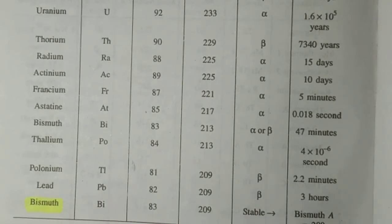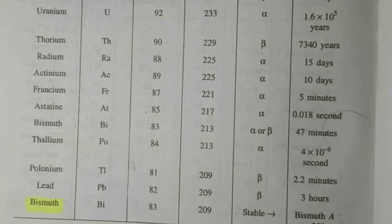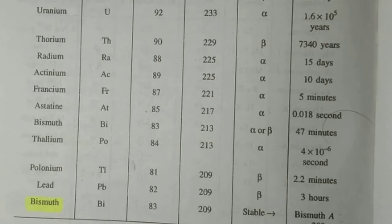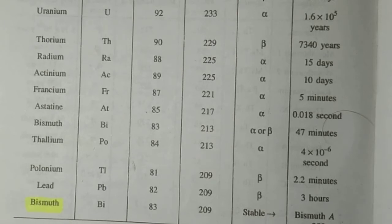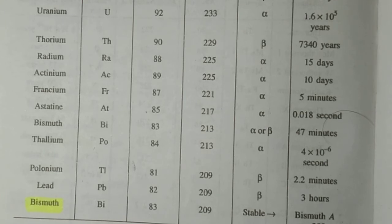So these are the radioactive series. It is also important how these series are classified in general terms. The four general terms are: 4n, 4n plus 1, 4n plus 2, and 4n plus 3. 4n plus 3 is the actinium series and 4n plus 1 is the neptunium series. So this is all for today. I hope this video is clear to all of you.